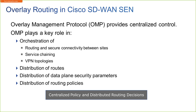OMP is responsible for advertising routes as well as other things — distribution of routes, distribution of data plane security parameters, and so on. It's also responsible for distributing OMP routes themselves, which are called V-routes, our transport location, which are those T-lock tuples we talked about previously, and then finally our service routes. The overlay network is basically controlled by this overlay management protocol. It's the most important element with regard to establishing the overall SD-WAN fabric.